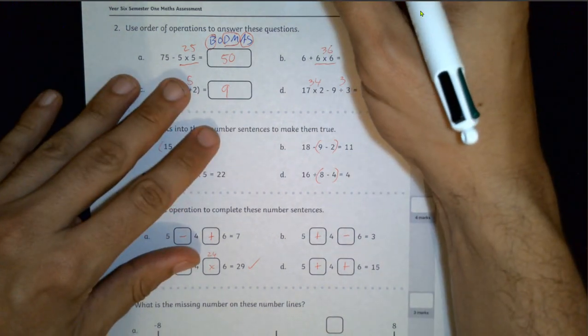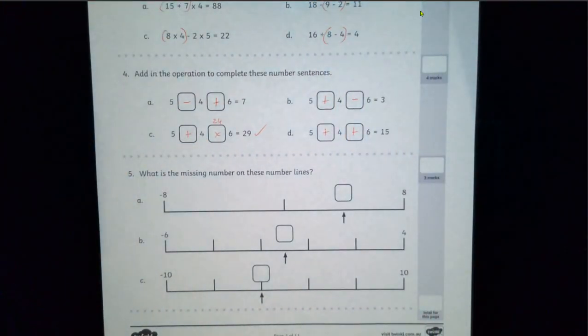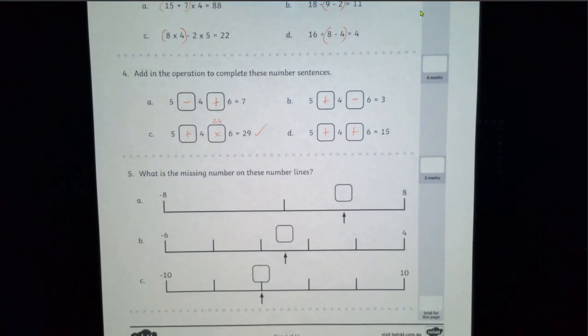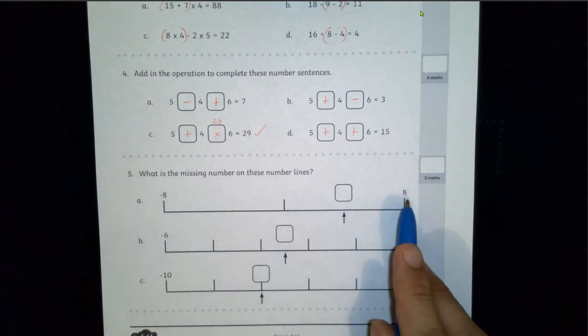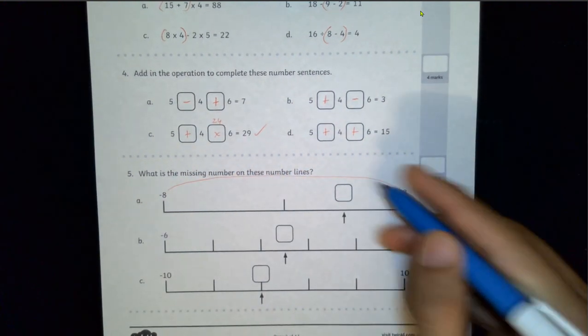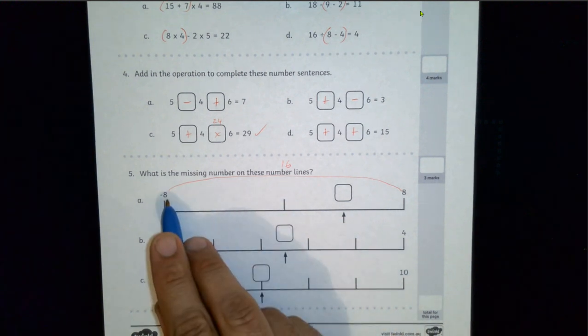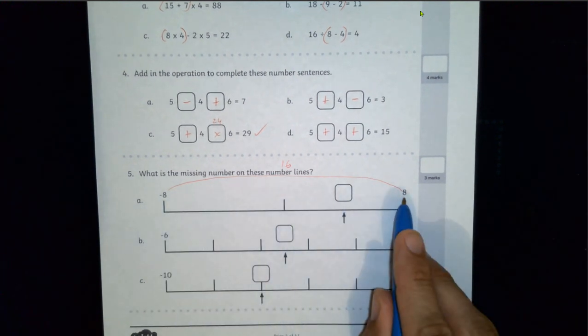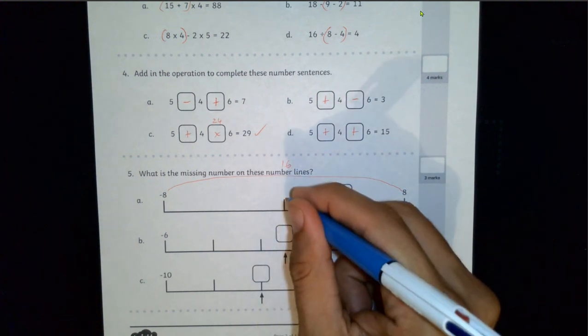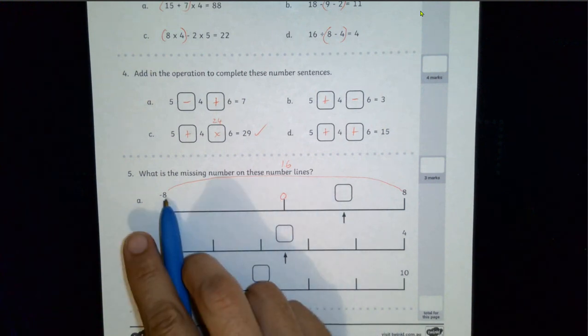Alright, last little section for this page. What is the missing number on these number lines? So there's minus 8, there's 8. That's a span of 16. So 16 is our span. Half of 16 is 8, which means this middle part must be 8 away from minus 8, and 8 away from 8. So 8 take 8 will be 0. And that's obviously going to be 8 more than minus 8.